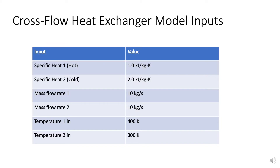Our goal is to examine the impact of flow type within cross-flow heat exchangers. Computational models of each system were used to investigate these effects. To best compare mixed and unmixed flows, all other parameters remain constant. This table summarizes those inputs. For the hot and cold fluid, we have specific heats of 1 and 2 kJ per kg·kelvin respectively. Mass flow rates of 10 kg per second were used for both fluids. The temperature in for the hot fluid was 400 kelvin, and the temperature in for the cold fluid was 300 kelvin.